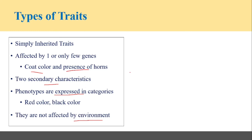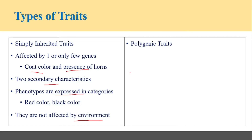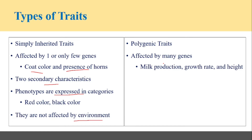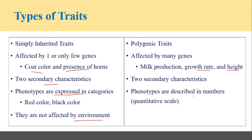Now let's discuss the other type of traits known as polygenic traits. Polygenic traits are those traits which are affected by a large number of genes — not just a single gene, but many genes, and the number might be hundreds or thousands. Examples include milk production, growth rate, height, and birth weight. A key characteristic of polygenic traits is that their phenotypes are described in numbers, and in most cases on a quantitative scale, which is why they are also known as quantitative traits.